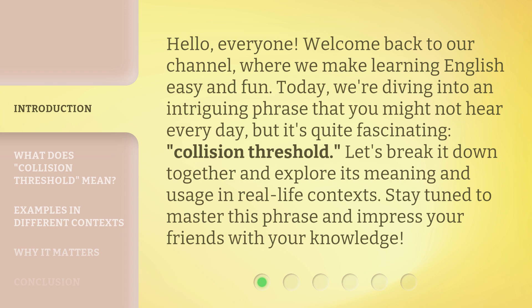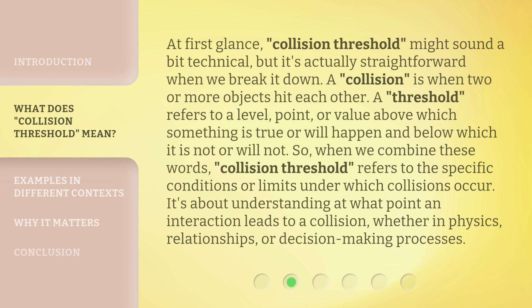At first glance, collision threshold might sound a bit technical, but it's actually straightforward when we break it down. A collision is when two or more objects hit each other. A threshold refers to a level, point, or value above which something is true or will happen, and below which it is not or will not.